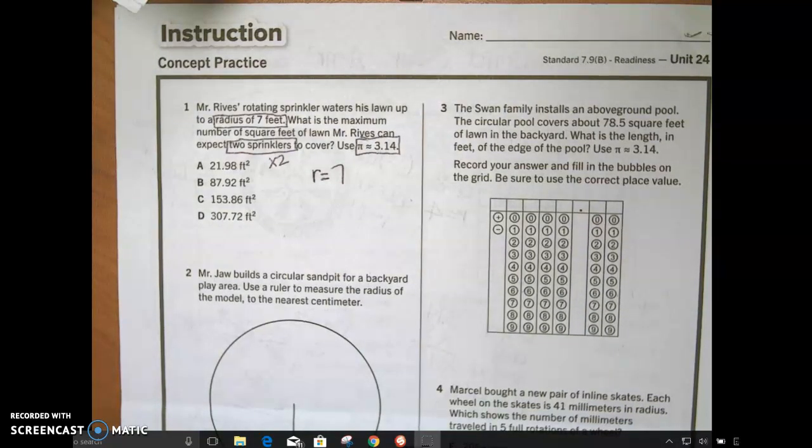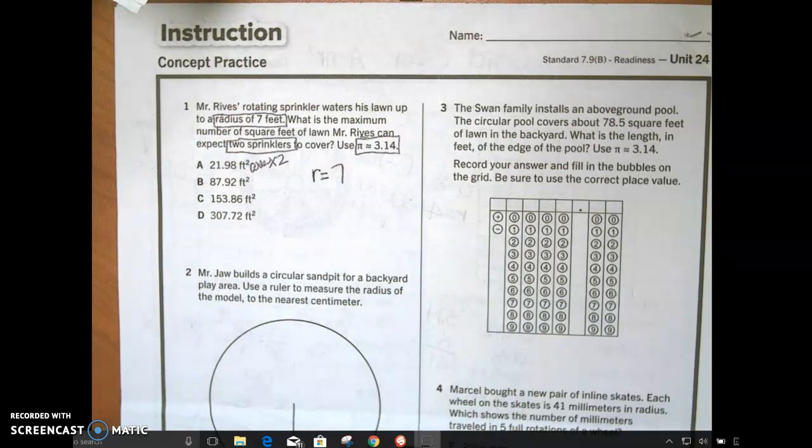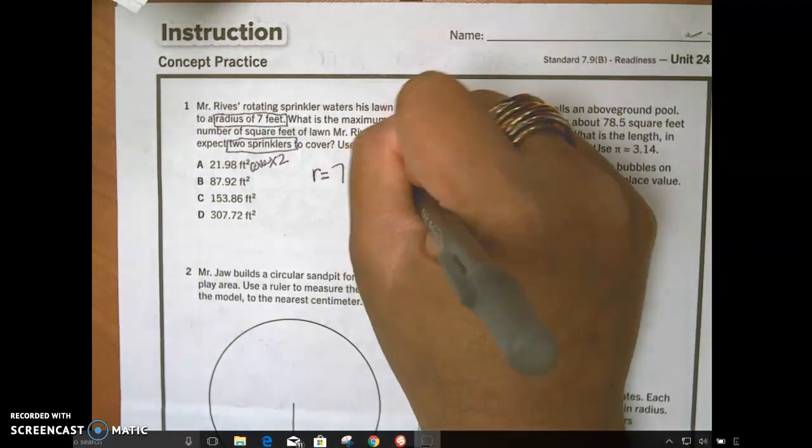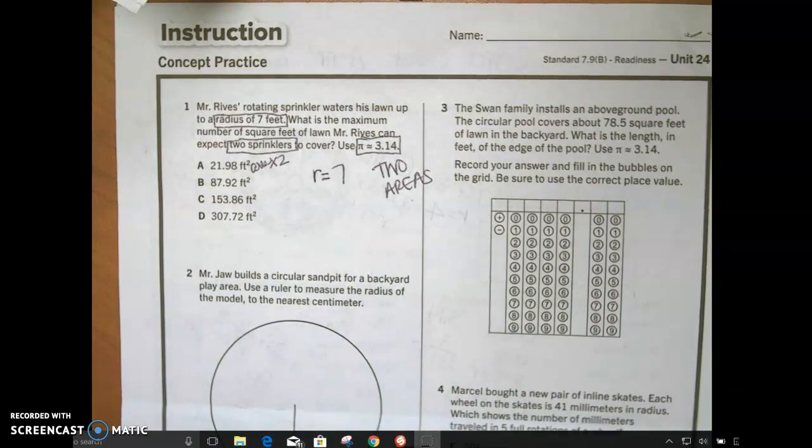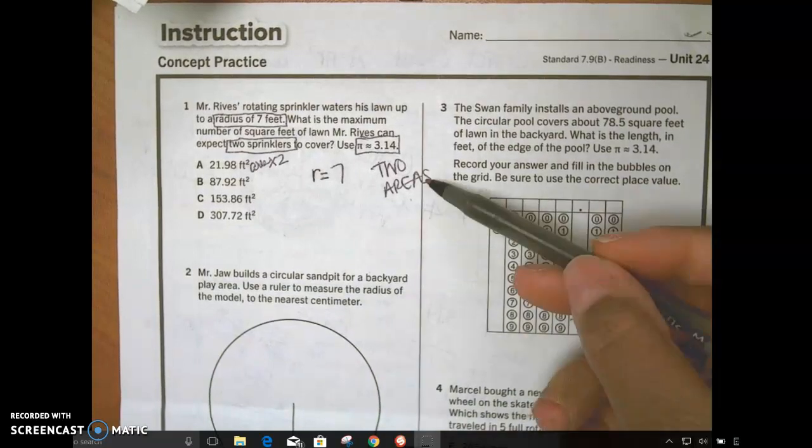Is it circumference? Am I going in a circle for my sprinkler? The sprinkler just covers around a circle? It covers the inside. So two areas. So area times two. I write this down here for me so that when I solve my problem, I know what I need to do. I need the area twice.